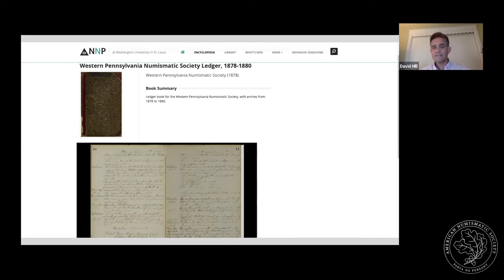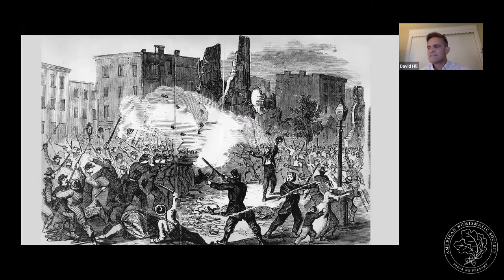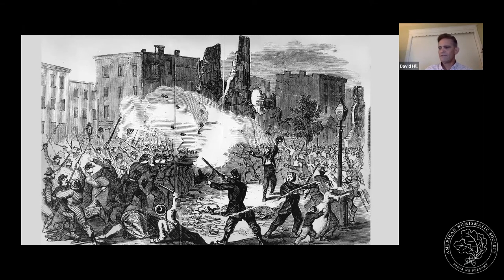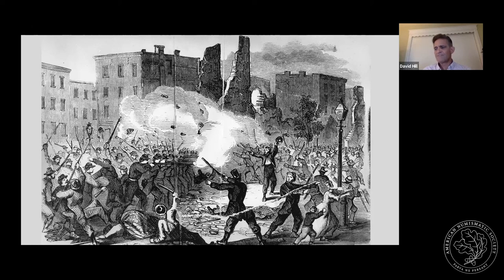Europe had about a 20-year head start on the United States in this area. Such societies and numismatic journals had been established in France and Belgium in the 1830s and 1840s, and the Numismatic Society of London — later renamed the Royal Numismatic Society — got started in 1836. In the United States, the Civil War years of the 1860s were a tenuous time for these groups. In New York City, not only were the streets and parks taken over by troops mustering for war, but rebellion against the draft policies led to violent rioting and arson directed at the city's black residents.